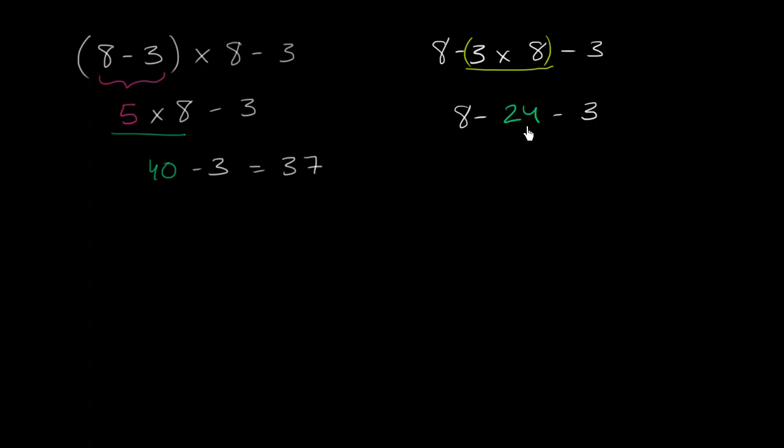Now 8 minus 24 is negative 16. You subtract another 3, you're going to get to negative 19. So clearly, you get very different values depending on whether or not you have parentheses.